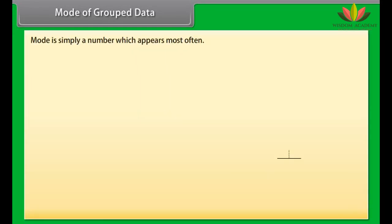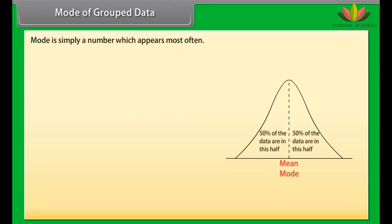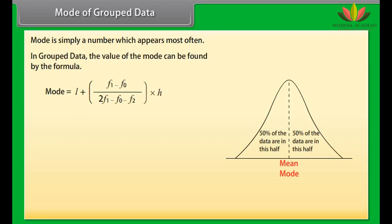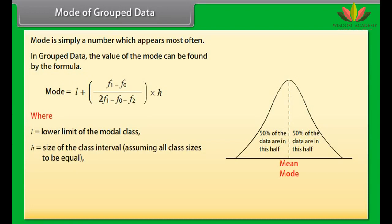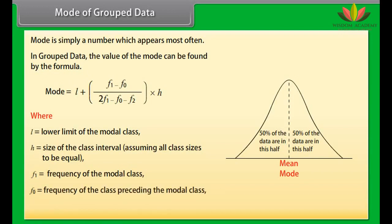Mode of grouped data: Mode is simply the number which appears most often. In grouped data, the mode is found using the formula: L plus [(F1 minus F0) divided by (2F1 minus F0 minus F2)] multiplied by H, where L is the lower limit of the modal class, H is the class size, F1 is the frequency of the modal class, F0 is the frequency of the class preceding the modal class, and F2 is the frequency of the class succeeding the modal class.